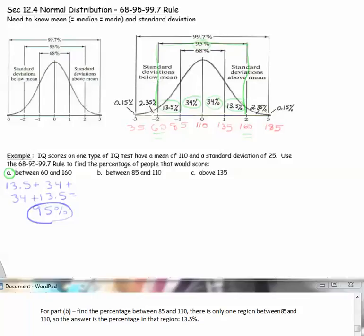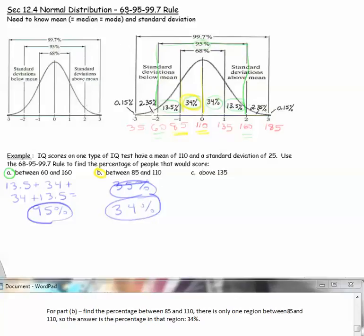The markings on the graph are green for part A. For part B, we'll do yellow markings. Part B is to find the percentage between 85 and 110. Here's 85 and here's 110. There's only one region in between there, so that percentage would be the answer, 34%. Sorry, there was a mistake in the transcript below. That should have said 34%.